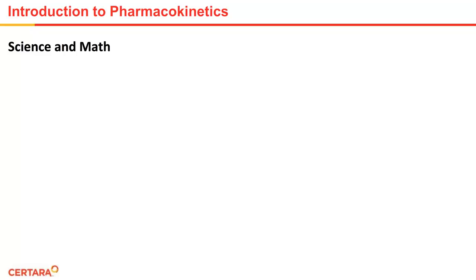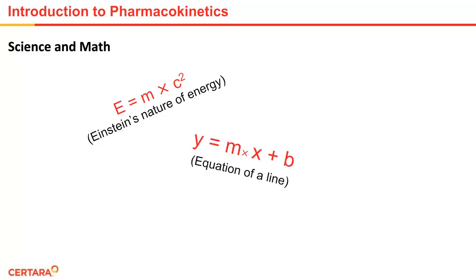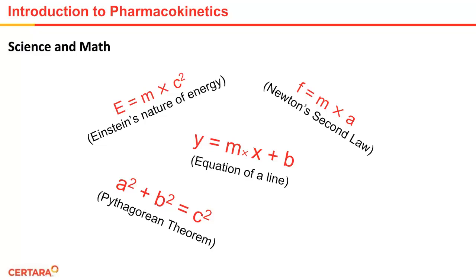Science and math have always been linked together. There are many examples of science and math. Einstein's nature of energy, where E equals mc squared, explains how mass can be changed into energy and vice versa. There is an equation that describes a line, y equals mx plus b. Newton's second law of motion. The Pythagorean theorem states that the square of the side opposite to the right angle, c, is equal to the sum of the squares of the other two sides, a and b. And Beer's law relating the absorption of light to the properties of the material through which the light is traveling. All these are mathematical constructs that explain what you see in the real world.